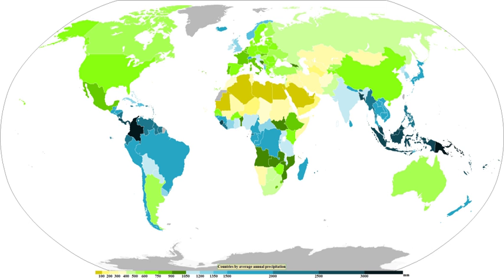Developing countries have noted that their populations show seasonal weight fluctuations due to food shortages seen before the first harvest, which occurs late in the wet season. Tropical cyclones, a source of very heavy rainfall, consist of large air masses several hundred miles across with low pressure at the center and with winds blowing inward towards the center. Although cyclones can take an enormous toll in lives and personal property, they may bring much-needed precipitation to otherwise dry regions. Areas in their path can receive a year's worth of rainfall from a tropical cyclone passage.